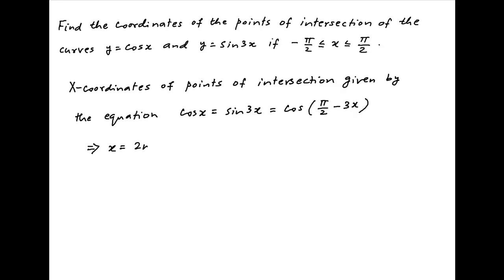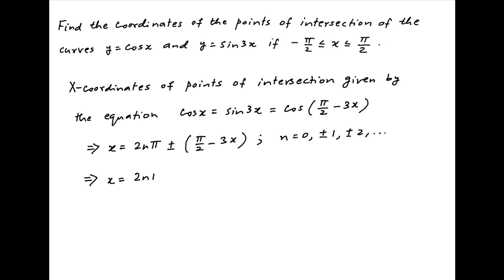Therefore, the general solution is given by x = 2nπ ± (π/2 − 3x), where n takes the values 0, ±1, ±2, and so on. Taking the plus sign, we have x = 2nπ + π/2 − 3x. And taking the minus sign, we have x = 2nπ − π/2 + 3x.